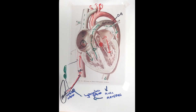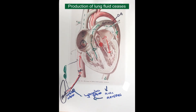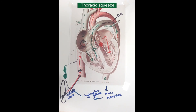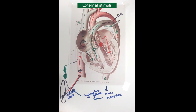While still in utero the fetus can't breathe, but the trigger is there. Once born, that trigger causes the baby to breathe. Additionally, the production of lung fluid that has been occurring during pregnancy ceases. As the fetus travels down the vagina, thoracic squeeze pushes fluid out of the lungs. As soon as the baby is born, external stimuli — bright lights, noise, a drop in temperature — also stimulate the baby to breathe.